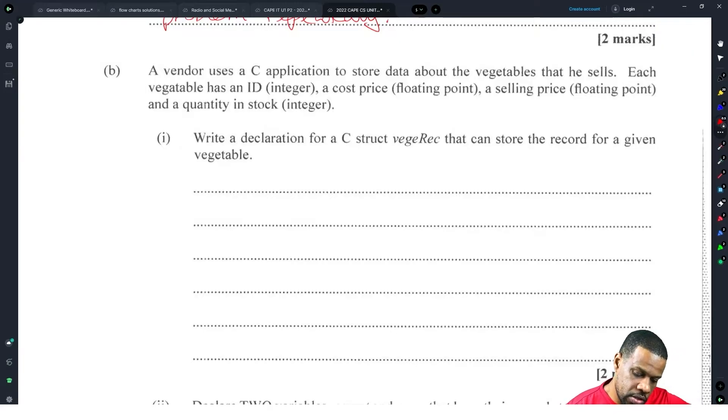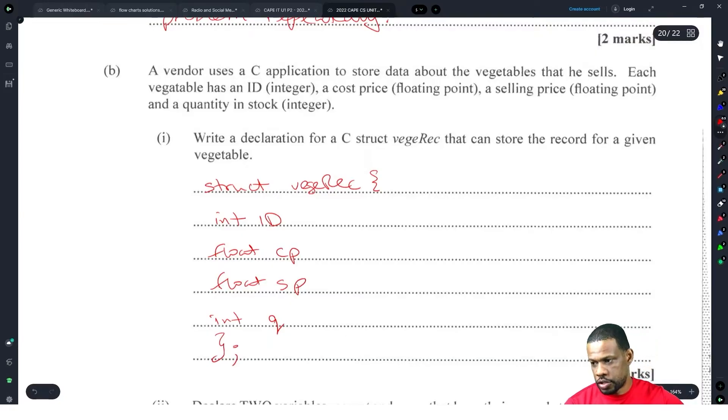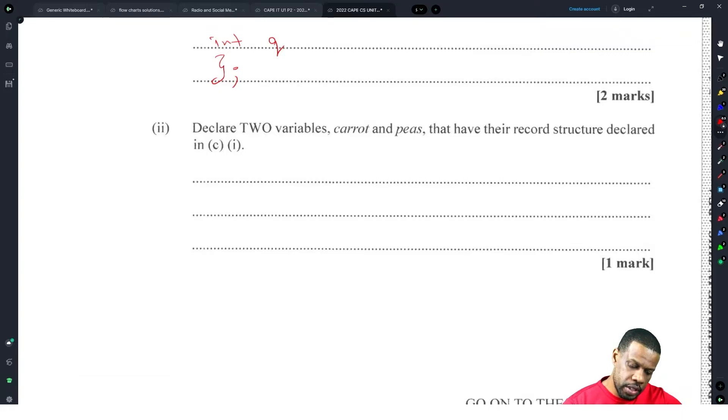A vendor uses a C application to store data about the vegetables that he sells. Each vegetable has an ID integer, cost price, selling price floating point. Write a C declaration for a struct. Struct veggie: int id, float cp, float sp, and int q for quantity. Two marks for that structure.